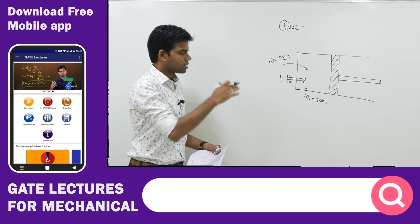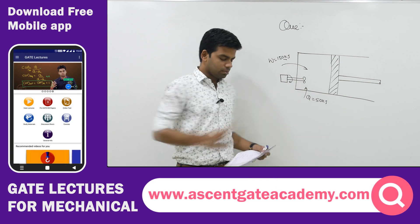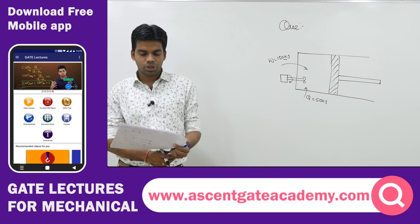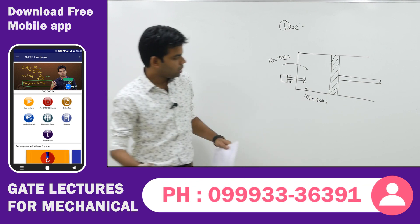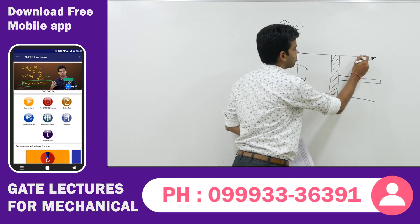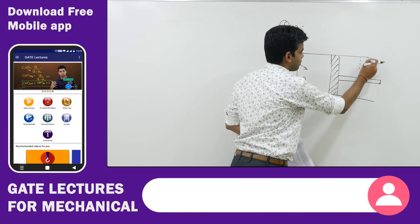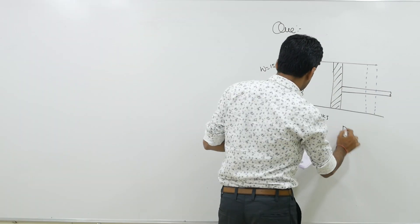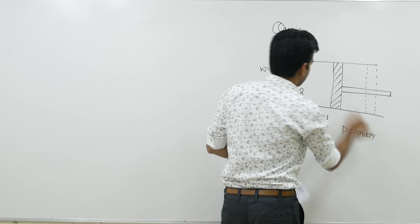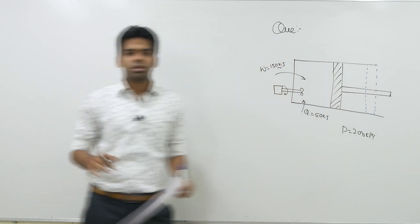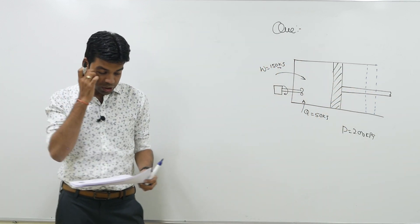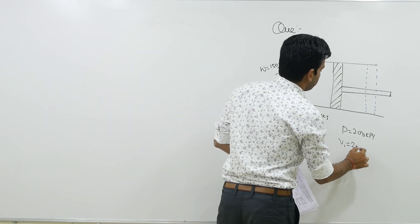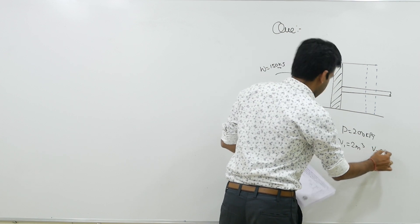The work done is 150 kilojoule on the system and heat transferred to the system is 50 kilojoule. At the same time, the piston in the cylinder moves such that the pressure remains constant at 200 kilo Pascal throughout the process, during the fluid expansion from 2 cubic metres to 5 cubic metres. So initial volume V1 is 2 cubic metres and final volume V2 is 5 cubic metres.